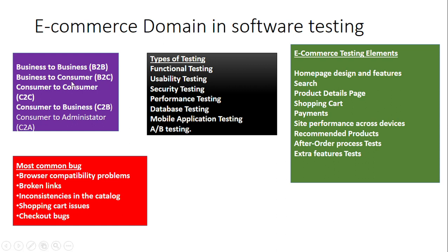There are five different types of e-commerce models. The first is Business to Business (B2B), the second is Business to Consumer (B2C), the third is Consumer to Consumer (C2C), the fourth is Consumer to Business (C2B), and the fifth is Consumer to Administrator (C2A). In the B2B model, one business sells its products or services to another business — a transaction done between two different companies, such as a wholesaler and a retailer.